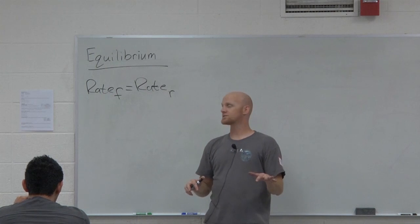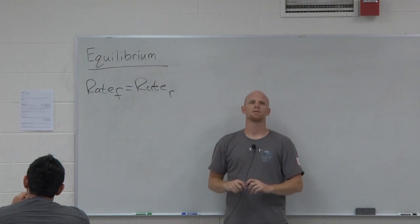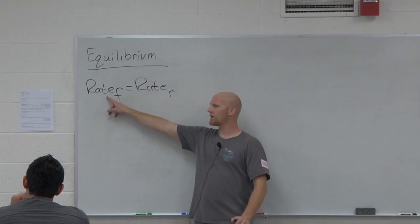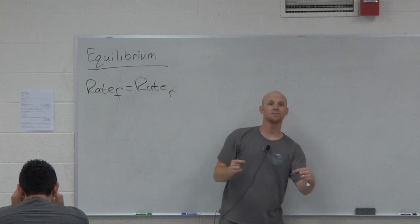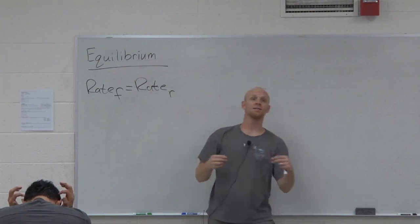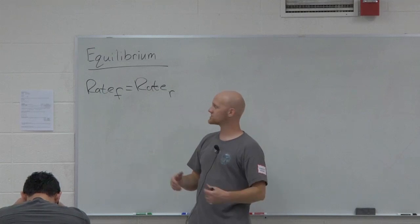So you're gonna get a question on the test in all likelihood that says which of the following is true about a system at equilibrium? Forward rate equals reverse rate, that's true. Forward rate constant equals reverse rate constant, not necessarily true. So that might be one of the false answers they try to get you on.